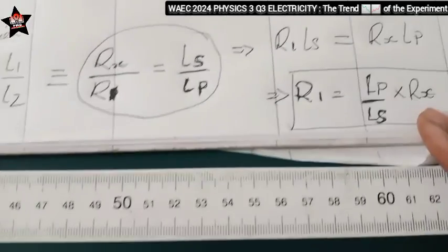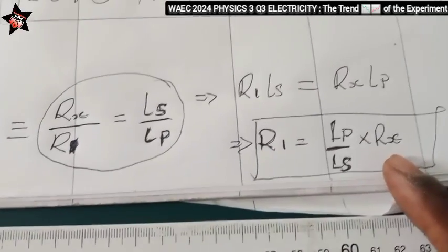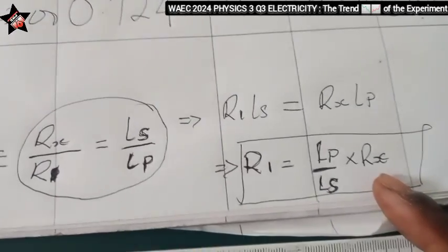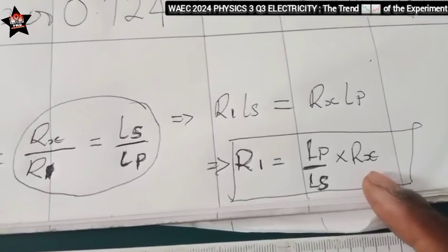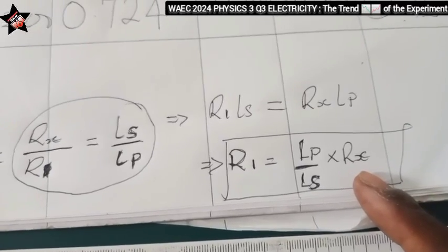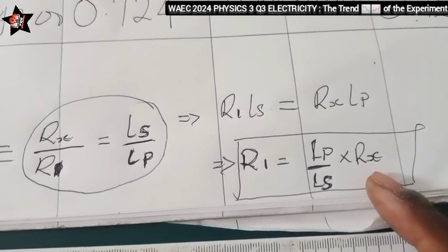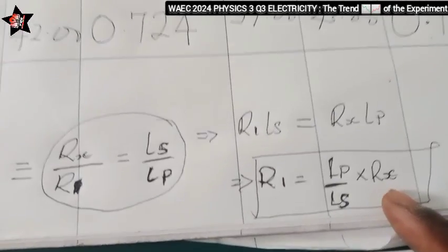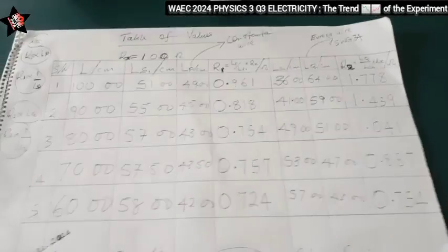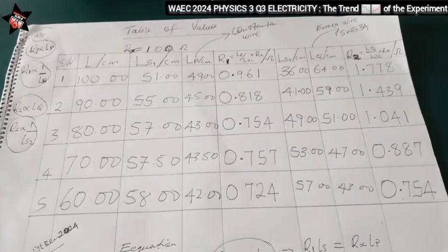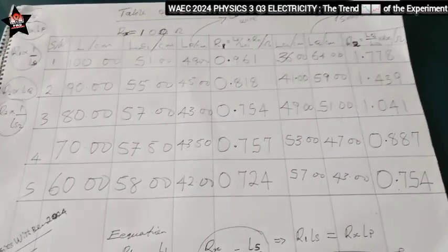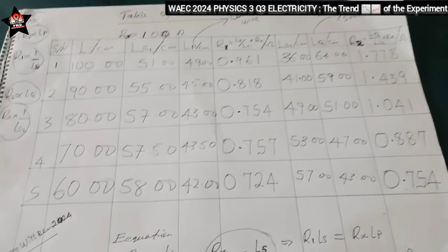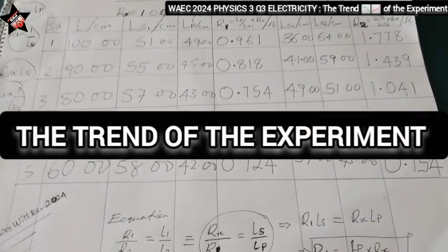Now Rx is constant here. In every experiment, there is something called the trend of the experiment. This is what WAEC will always consider. A lot of students are writing this exam nationwide, worldwide, and their values will never be the same. But something must be the same in this WAEC exam. That is called the trend of the experiment.